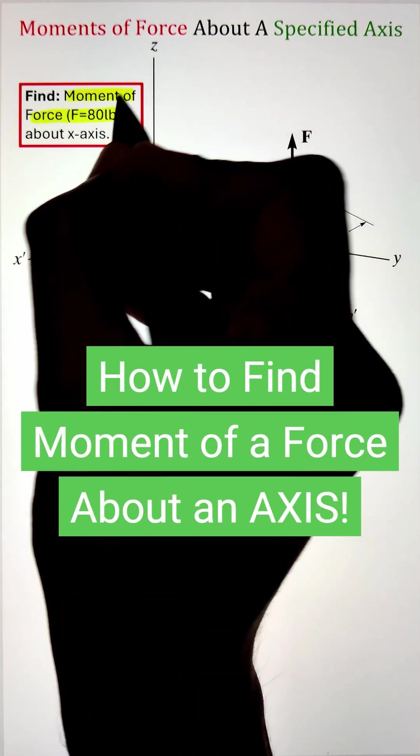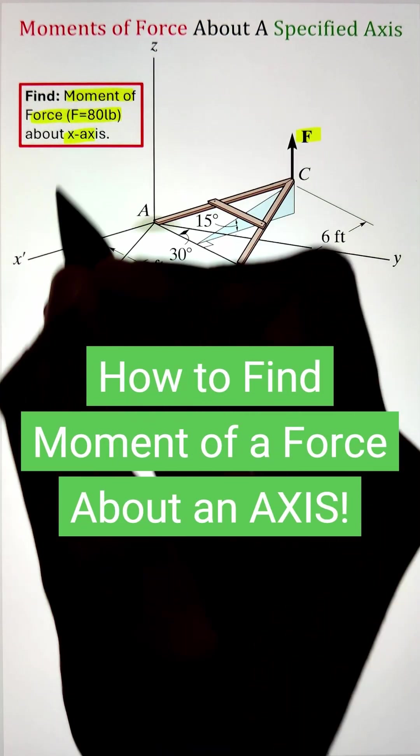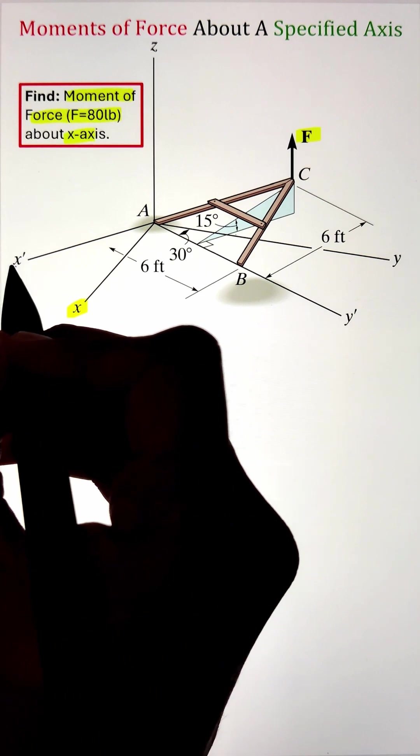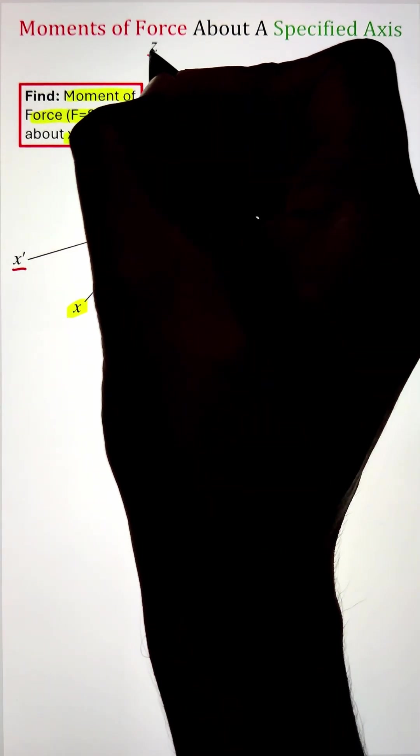In order to find the moment of a force having a magnitude of 80 pounds acting vertically upward about the x-axis, we first need to identify our reference axes here, considering x prime, y prime, and z as the reference axes.